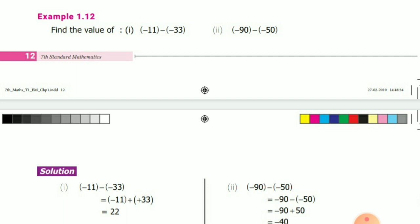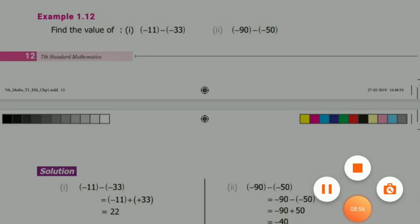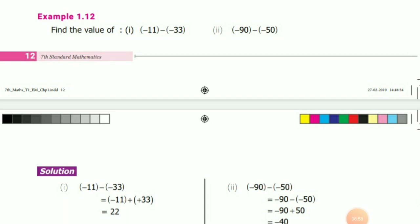Next: minus 90 minus (minus 50). Minus of minus means take the additive inverse — the additive inverse of minus 50 is plus 50. So minus 90 plus 50. One number is positive, one is negative: subtract the smaller from the greater — 90 minus 50 equals 40. The greater number symbol is minus 90, so the answer is minus 40.